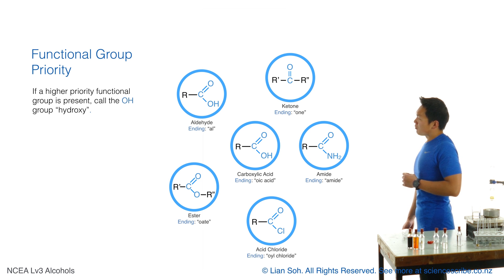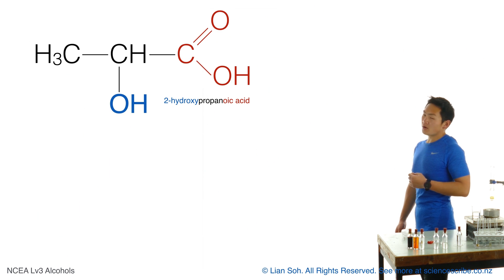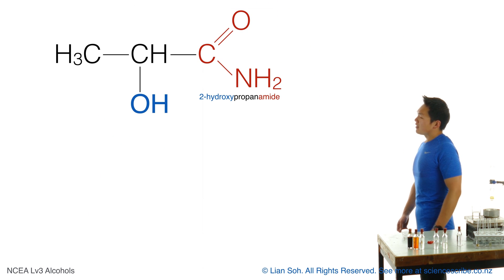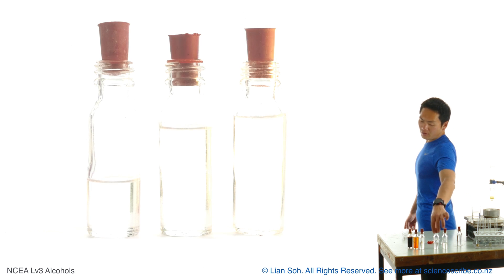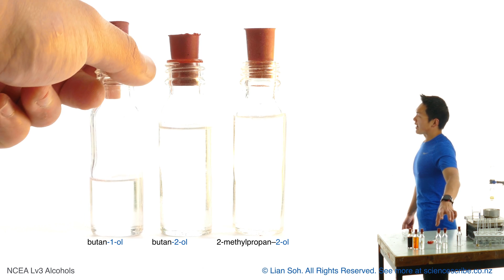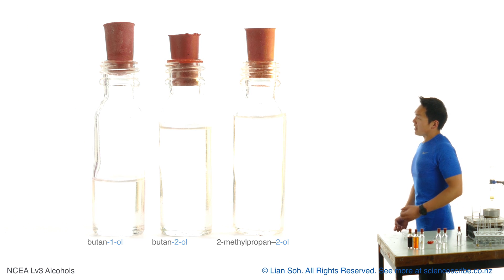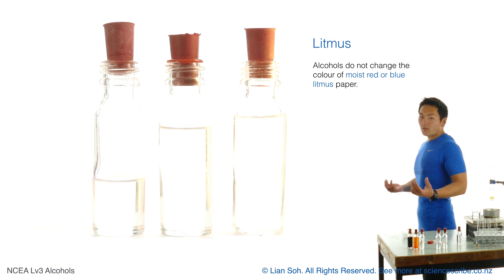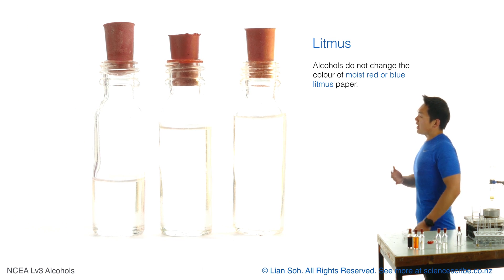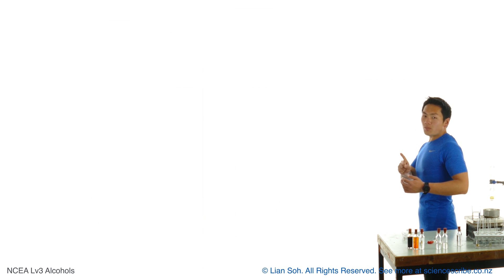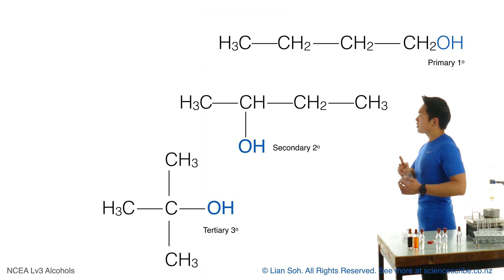When that OH group is present alongside any of those, we name it like a side group — so things like 2-hydroxypropanoic acid, 3-hydroxybutanol, or 2-hydroxypropanamide. From last year you also know that most alcohols are clear, colorless liquids and that they don't change the color of damp red or blue litmus — in other words, they're neutral.